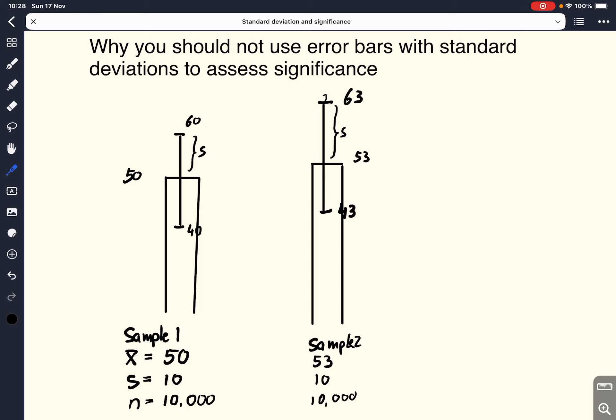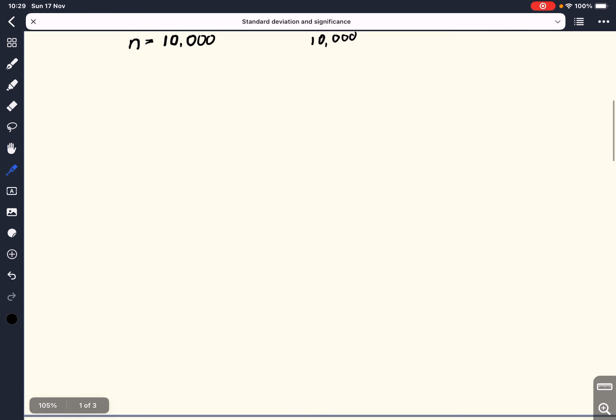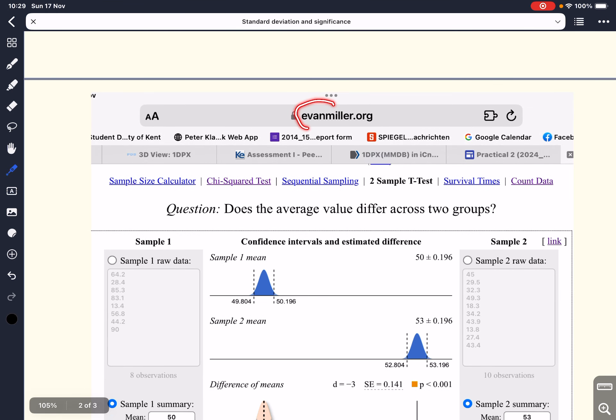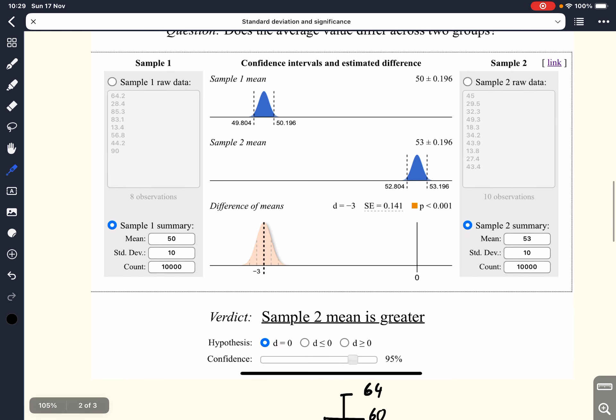We could now do a simple null hypothesis testing. We could use, for example, a t-test if we assume that our samples are from a normal distributed population and that the data are continuous. So we could perform a t-test. And we can do that with an online calculator. My favorite online calculator here is evanmiller.org.